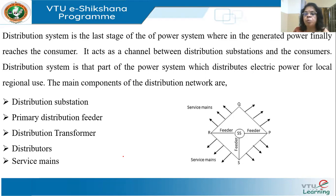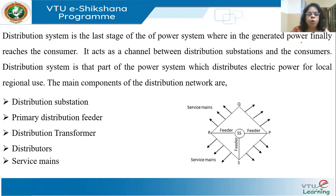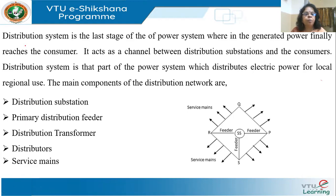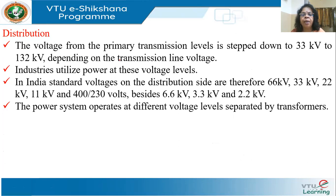The main components of the distribution network include the distribution substation, the primary distribution feeder, the distribution transformer, the distributors, and finally the service mains — the actual connection between the system and the consumer's premises. The voltage from the primary transmission level is stepped down to 33 kV to 132 kV, where primary distribution starts.